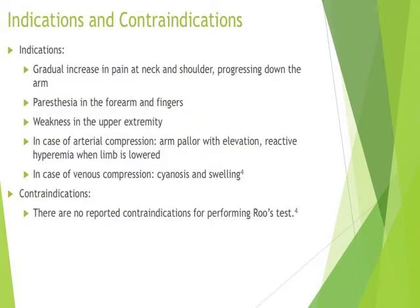The indications and contraindications for the Ruse Test. According to Branigan et al. in 2004, indications for Thoracic Outlet Syndrome, and therefore the use of the Ruse Test, include but are not limited to: gradual increase in pain at the neck and shoulder progressing down the arm, paresthesia in the forearm and fingers, weakness in the upper extremity, and in case of arterial compression, arm pallor with elevated reactive hyperemia when the limb is lowered, and in case of venous compression, cyanosis and swelling. There are no reported contraindications for performing the Ruse Test.